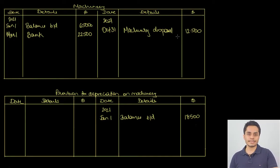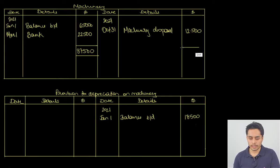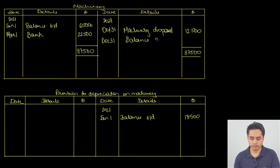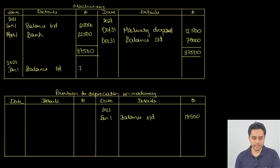Let us balance the machinery account. The total on the debit side is 87,500 — 65,000 opening plus 22,500 purchase. On December 31, balance carried down is 75,000. The same balance is brought forward: January 1st, balance brought down, 75,000.